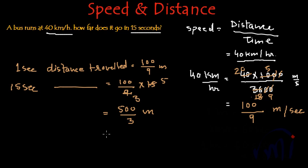And if we simplify it further, 3 times 1 is 3, 3 times 6 is 18, 3 times 6 is 18—that's 166 and 2 by 3 meters. This much distance will be traveled in 15 seconds. This is the required result.